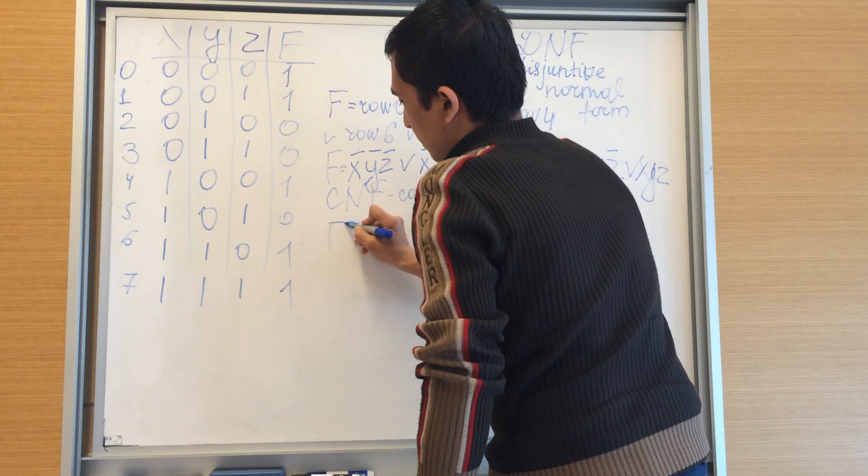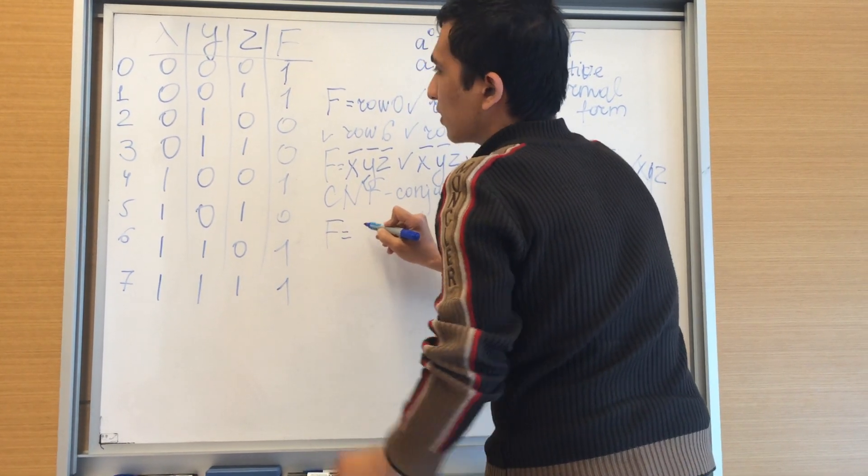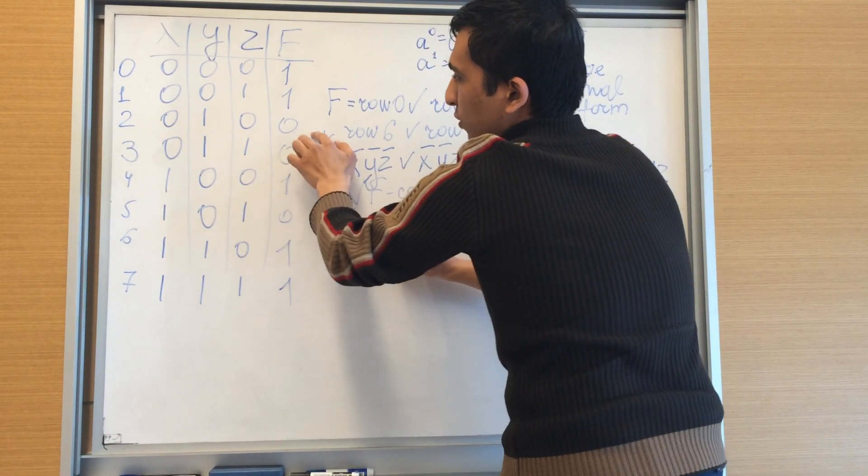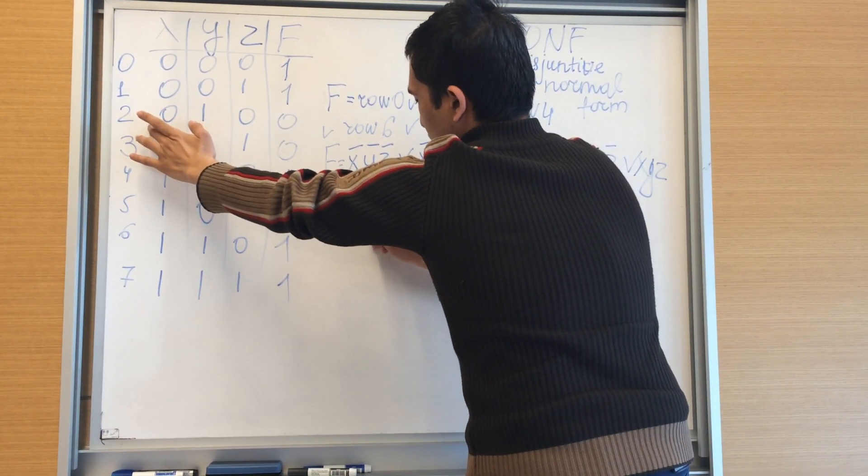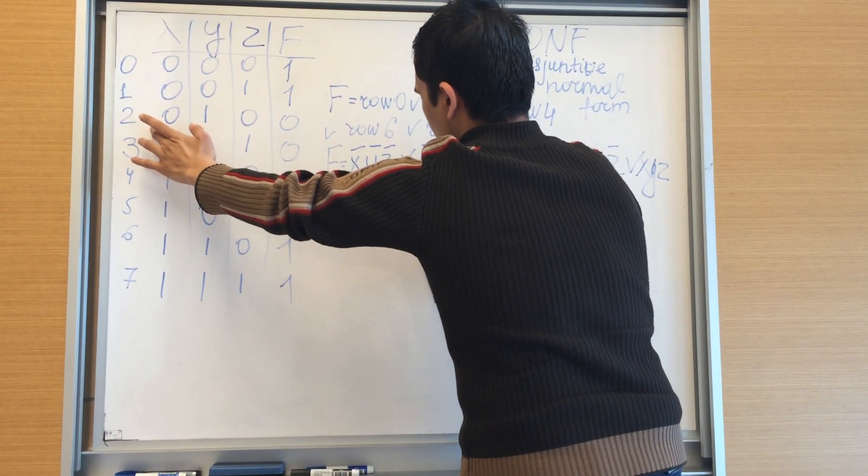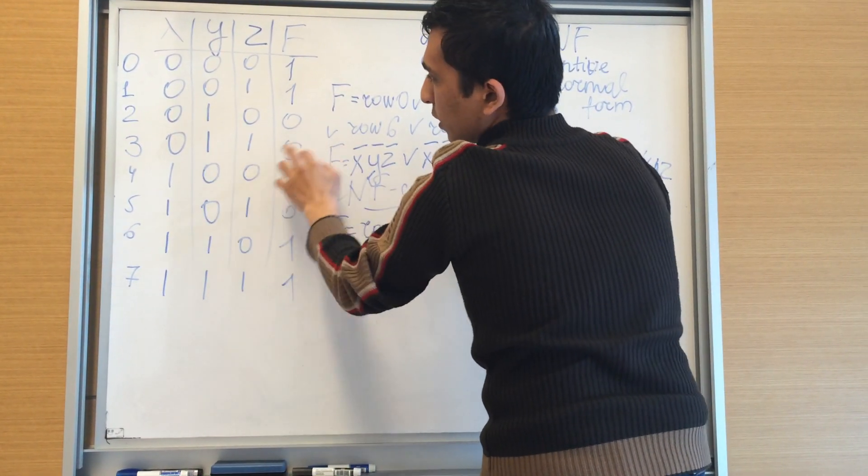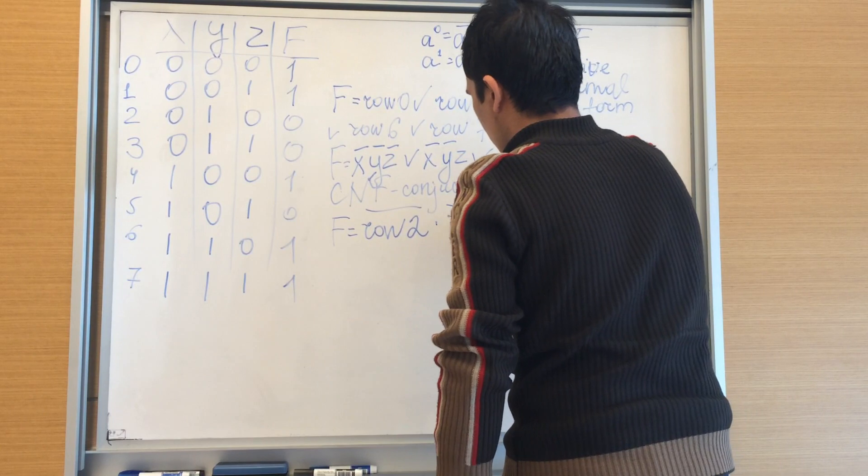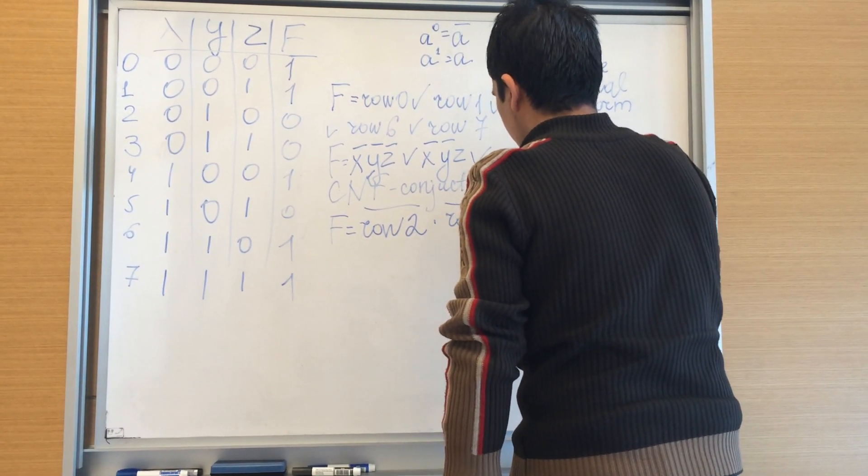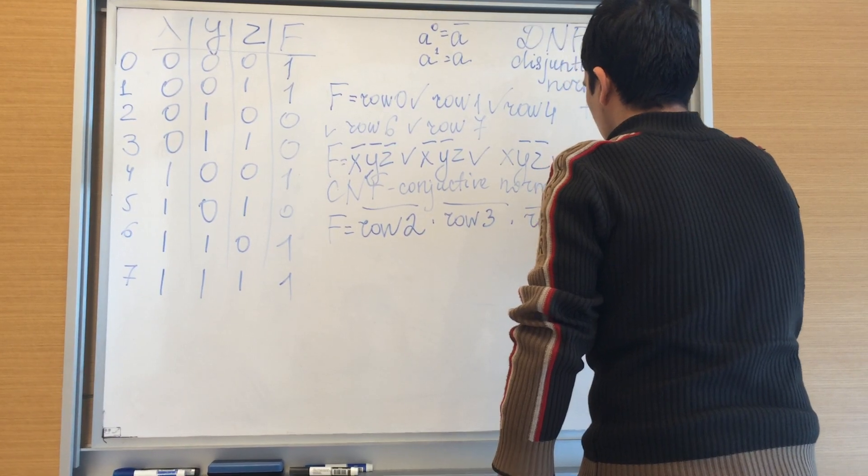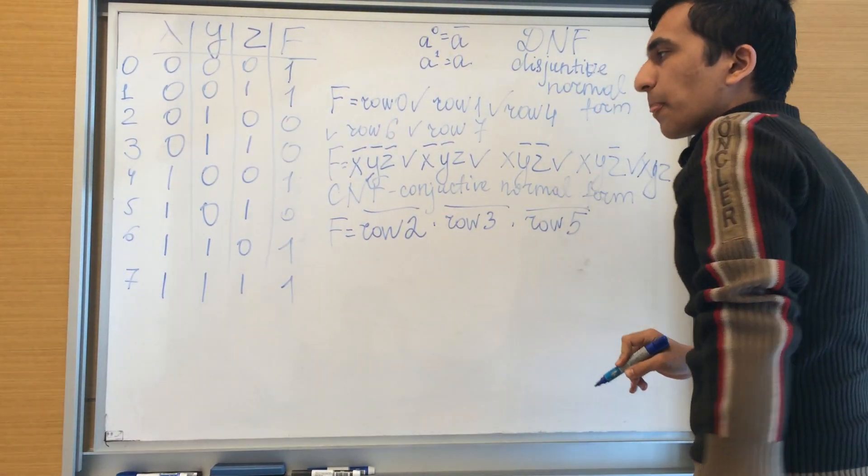The function will be equal to not row 2 multiplied by not row 3 multiplied by not row 5. And we can make them, we can simplify, we can make this expression more clear.